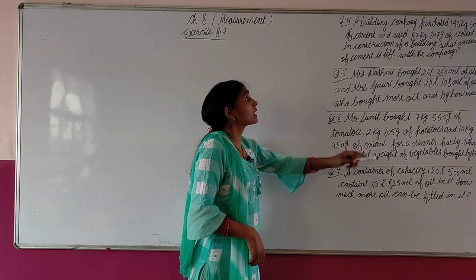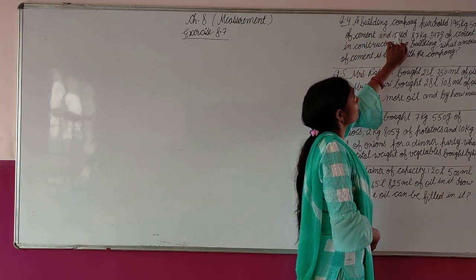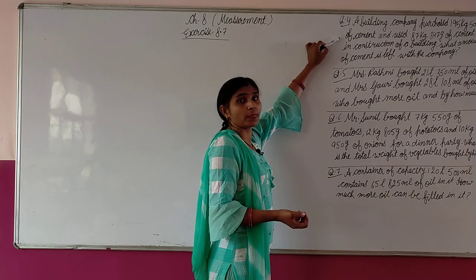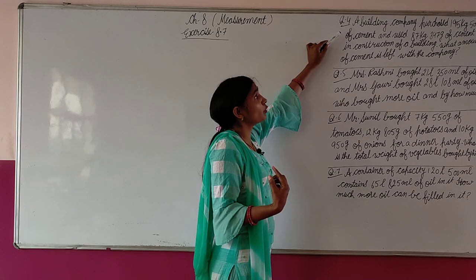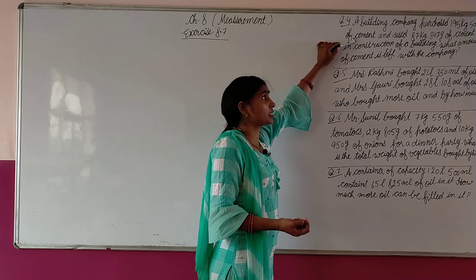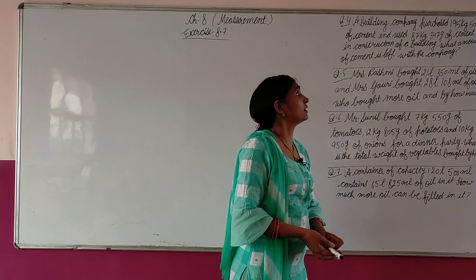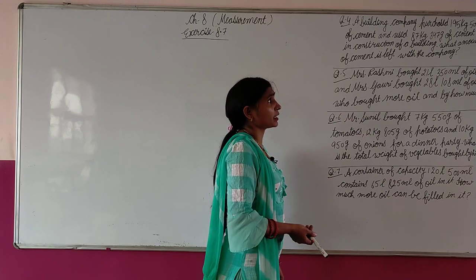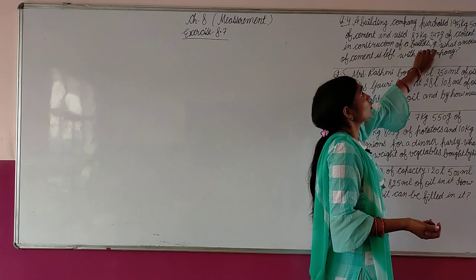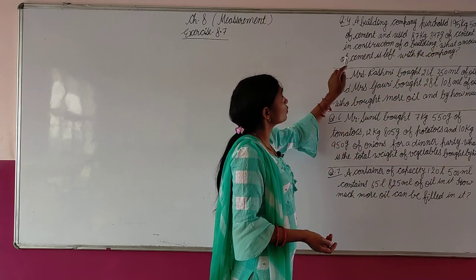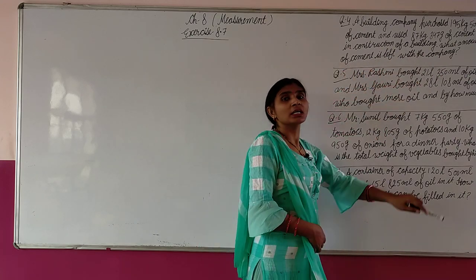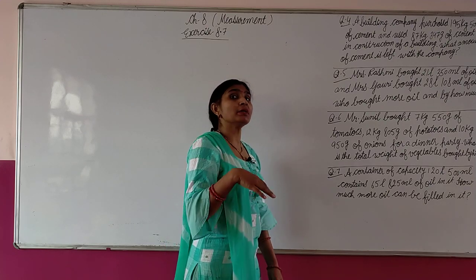Question four: A building company purchased 195 kilogram 505 gram of cement, and used 87 kilogram 347 gram of cement in the construction of a building. What amount of cement is left with the company?